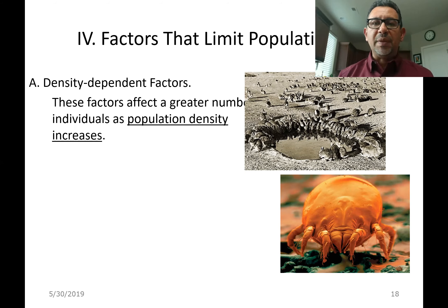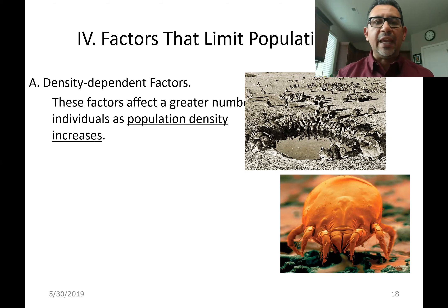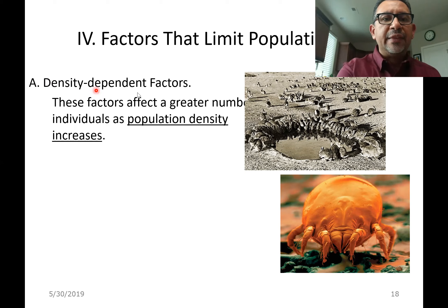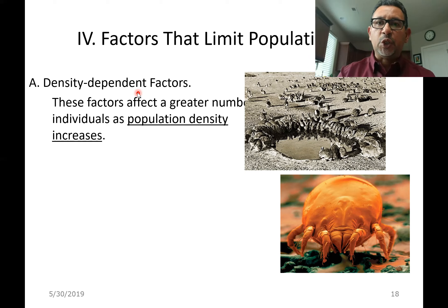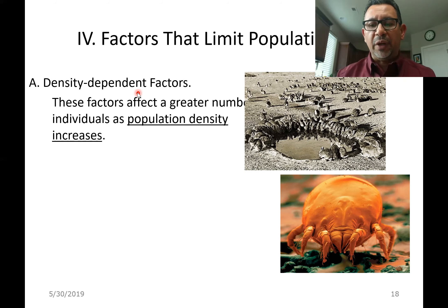These limiting factors can usually be classified into two groups: density-dependent factors and density-independent factors. Let's begin by paying attention to what we call the density-dependent factors. These are going to be those that are the result of overcrowding. Usually when there are too many members of a population in a limited space, these kinds of factors are going to limit population size — to a point that it may even drive a population down to a crashing point.